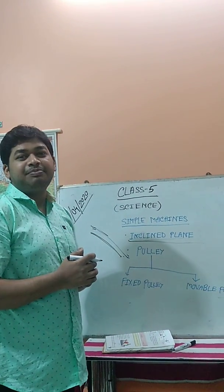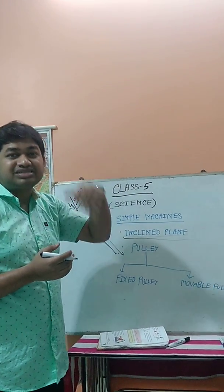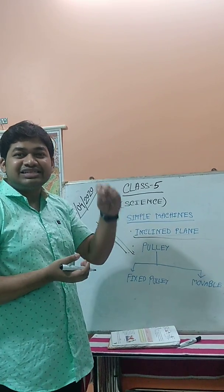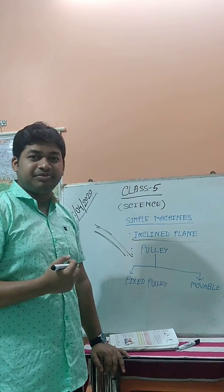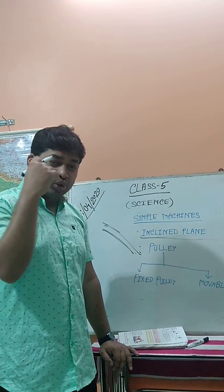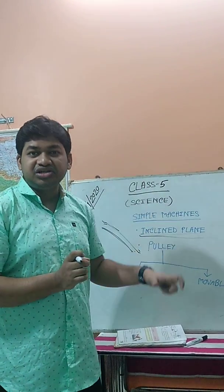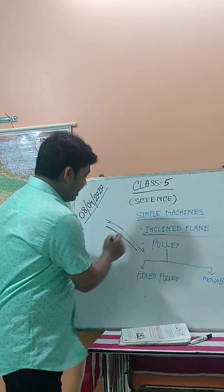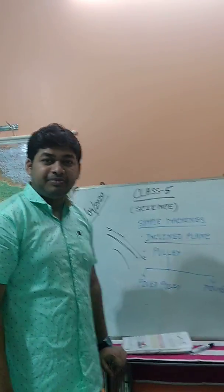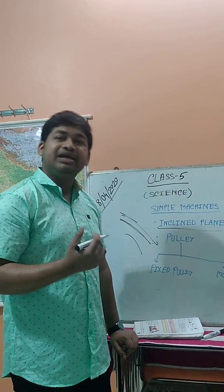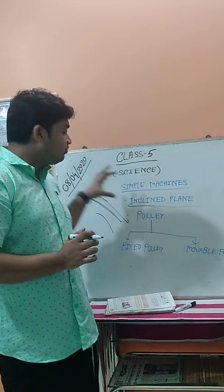Now, what are the examples of an inclined plane? In a children's park you can see slides where children slide down — these are examples of the inclined plane. Also, in our school or home, on the stairs there is a slanting surface or ramp. This slanting surface is also known as the inclined plane or ramp.